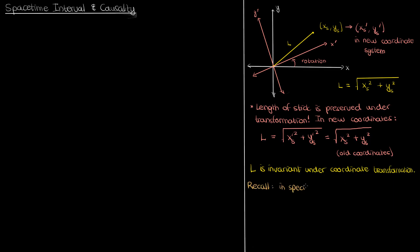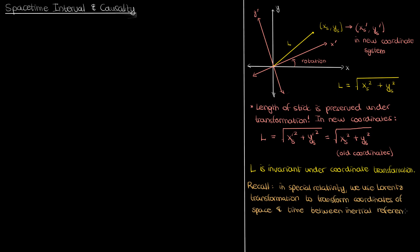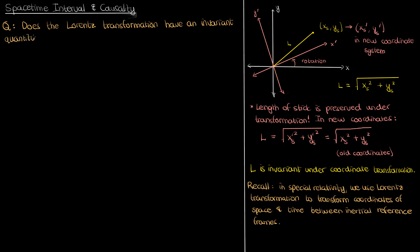Now in special relativity, when we transform coordinates of space and time between different inertial reference frames, we don't use a simple rotation — we use the Lorentz transformation. The question becomes: just like there was an invariant quantity given by the sum of squares under a simple rotation in our regular two-dimensional coordinate system, is there an equivalent invariant quantity for a Lorentz transformation? And the answer, of course, is yes.